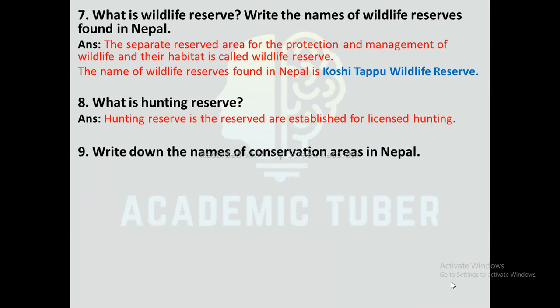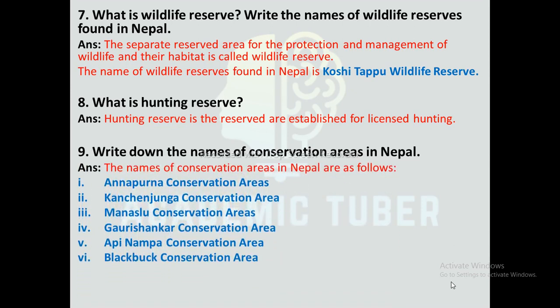Question number 9: Write down the names of conservation areas in Nepal. The conservation areas in Nepal are as follows: Annapurna Conservation Area, Kanchanjunga Conservation Area, Manasalu Conservation Area, Gauri Shankar Conservation Area, Oppi Nampa Conservation Area, and Blackbuck Conservation Area.